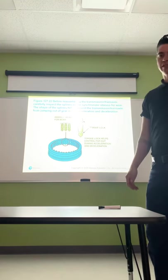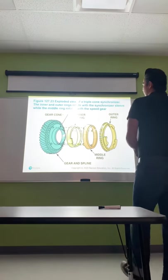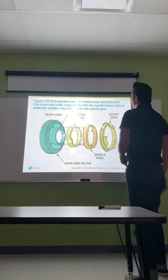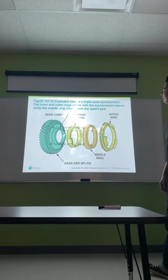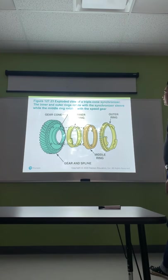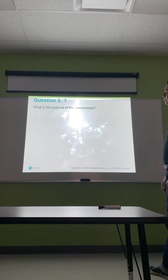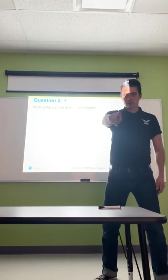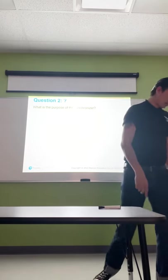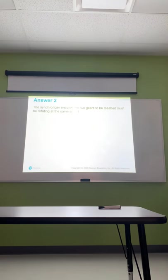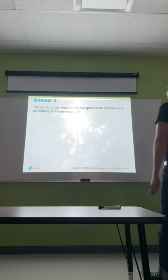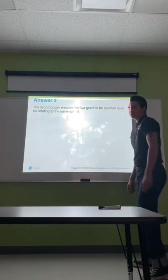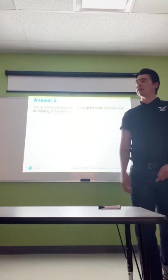An exploded view of a triple-cone synchronizer shows that the inner and outer rings rotate with the synchronizer sleeve, while the middle ring rotates with the speed gear. The purpose of a synchronizer is to ensure the two gears to be meshed are rotating at the same speed — it helps speed them up or slow them down.